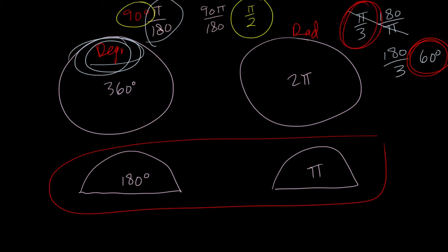So just to quickly sum that up, if we're going from degrees into radians, we want π in our answer, and so we're going to use π over 180.